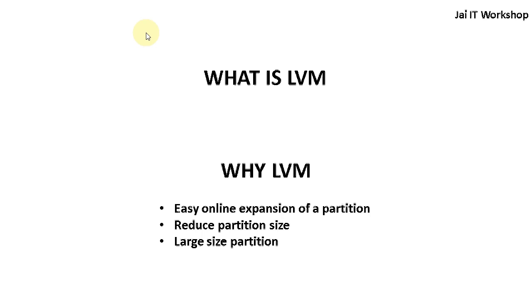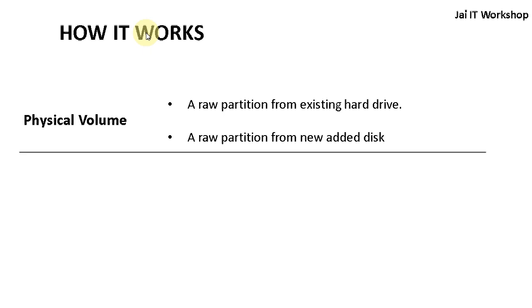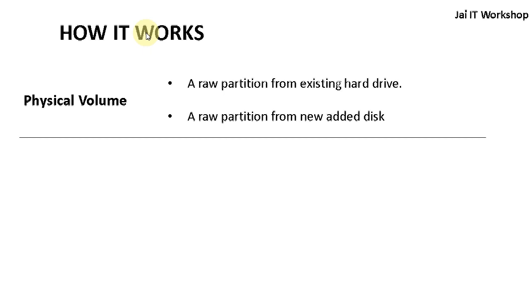Now let's see how LVM works. LVM works in three different stages. The first stage is the Physical Volume. You need to create a raw partition through fdisk or parted utility, and then convert that raw partition into a physical volume. If you don't do this, you will not be able to create a logical volume. So the first step is to create a raw partition and convert it to a physical volume.